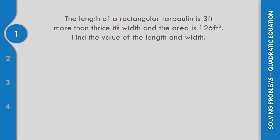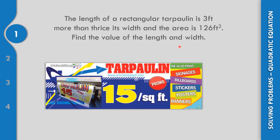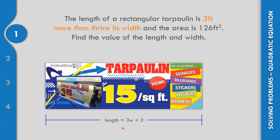The length of a rectangular tarpaulin is 3 feet more than thrice its width, and the area is 126 square feet. Find the value of the length and width. If we consider the length, based on the problem, it is 3 feet more than thrice its width.